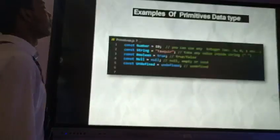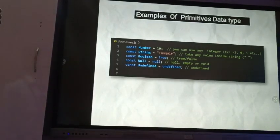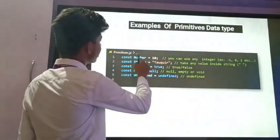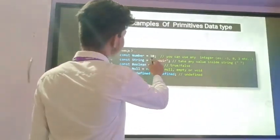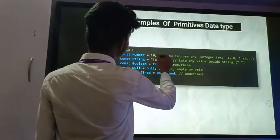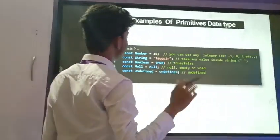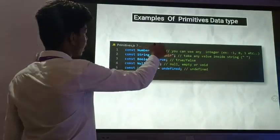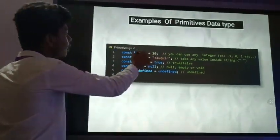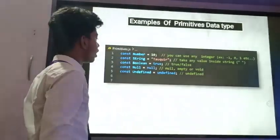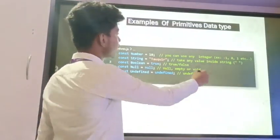Here is the example of primitive data type. Here is the variable, here is the variable name and here is the variable data. Here is a number. In variable data, I have a number that is 10. In the number, you can use any integer.